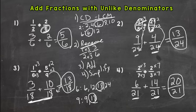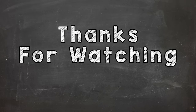So that's adding fractions with unlike denominators. Step one: check if your fractions have common denominators — if they don't, find one. Step two: rename with equivalent fractions using that common denominator. Step three: add the numerators and keep the denominator. Step four: simplify if necessary. Thanks for watching.